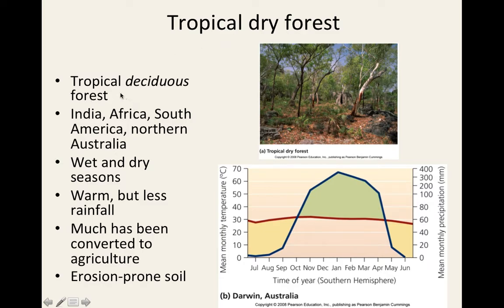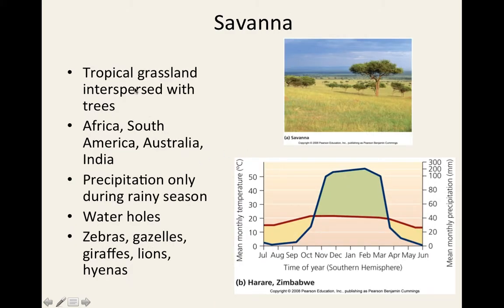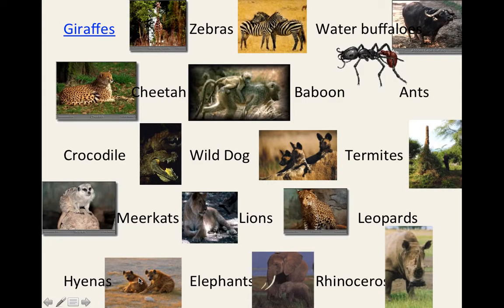The tropical dry forest, found in parts of India, Africa, and South America, has distinct wet and dry seasons. Temperatures remain constant while precipitation varies significantly — from very dry months to very wet, almost monsoon-like periods. The savannah, another tropical grassland similar to prairies, is located in Africa, South America, Australia, and parts of India. Precipitation occurs only during rainy seasons, and animals include zebras, gazelles, giraffes, lions, and hyenas.